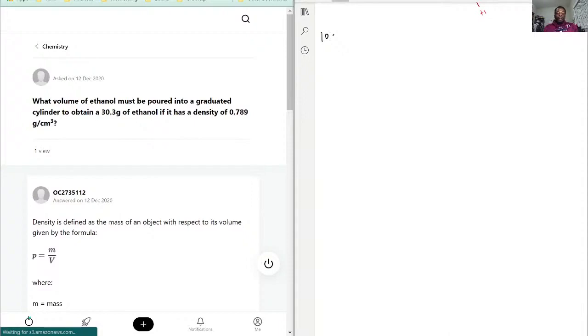What volume of ethanol must be poured into a graduated cylinder to obtain 30.3 grams of ethanol? It has a density of 0.789 grams per centimeter cubed.